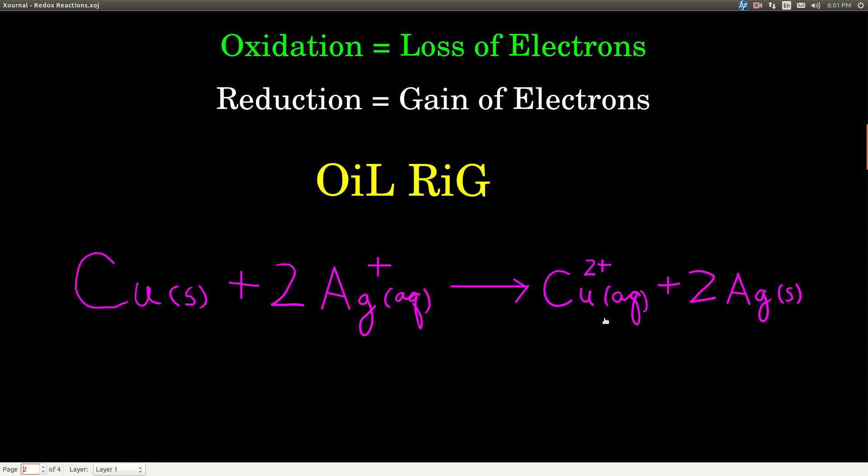Now notice the 2 here—the 2 is to balance the charge and the mass. Copper loses 2 electrons. Each silver, because it has a plus 1 charge, can only gain 1 electron. So we need 2 silver atoms to gain those electrons. One silver atom gains each of the electrons that is given off from the copper. And so we have 2 here and a 2 here to balance the mass.